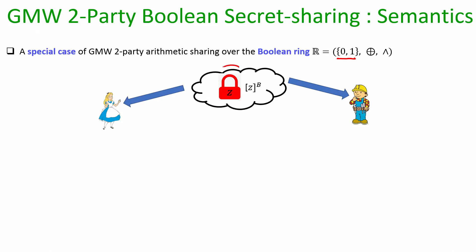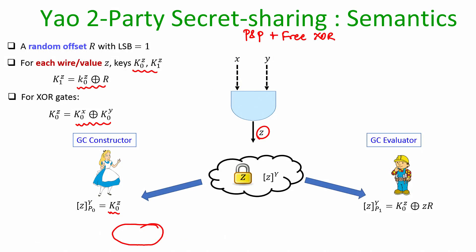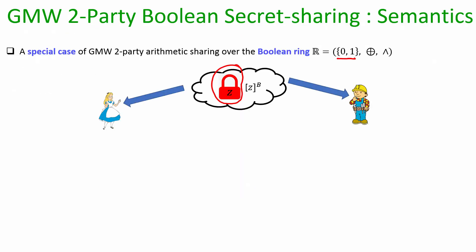I will be using a different coloured lock notation compared to the one used for Yao's secret sharing. For Yao's secret sharing the lock was one colour, and a value inside the lock means the value is secret shared. In mathematical notation, a bit secret shared as per the Yao syntax uses one symbol, while for GMW two-party Boolean sharing I will use a different coloured lock.